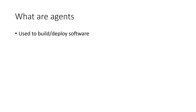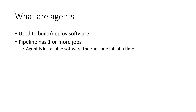You've probably heard me mention agents in some of the previous videos I've done. Agents are what's actually used to build and deploy the software that we're creating. When we create a pipeline and execute it, it runs on an agent. Specifically, a pipeline has one or more jobs. The agent is a piece of software that you install on a virtual machine, a physical machine, or in a container, that runs one job at a time.